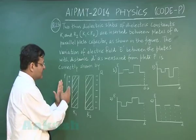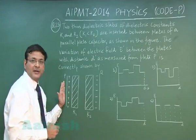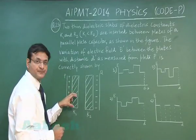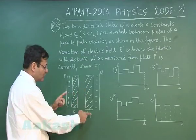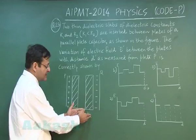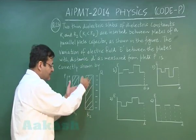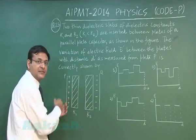Now see first you have to see that electric field should remain constant then it should decrease. Now again remain constant, then again decrease. Now you have to check the decrease: since k2 is larger, so decrease will be more in second part rather than first part.